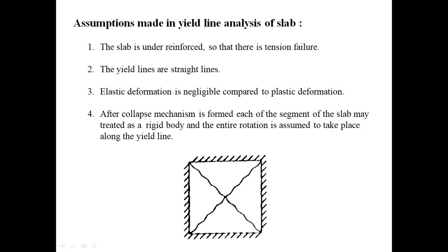Segments two and three will rotate against their axis — that is the yield line acting as the axis of rotation. Segments three and four will rotate against their axis, and segments four and one will rotate against their axis. So yield lines act as axes of rotation. These are the assumptions to consider while designing.